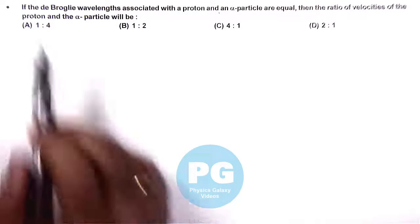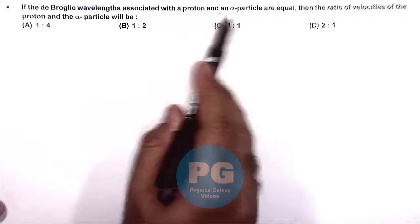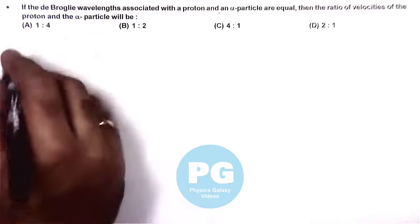In this question, if the de Broglie wavelengths associated with a proton and an alpha particle are equal, then the ratio of velocities of the proton and alpha particle will be...